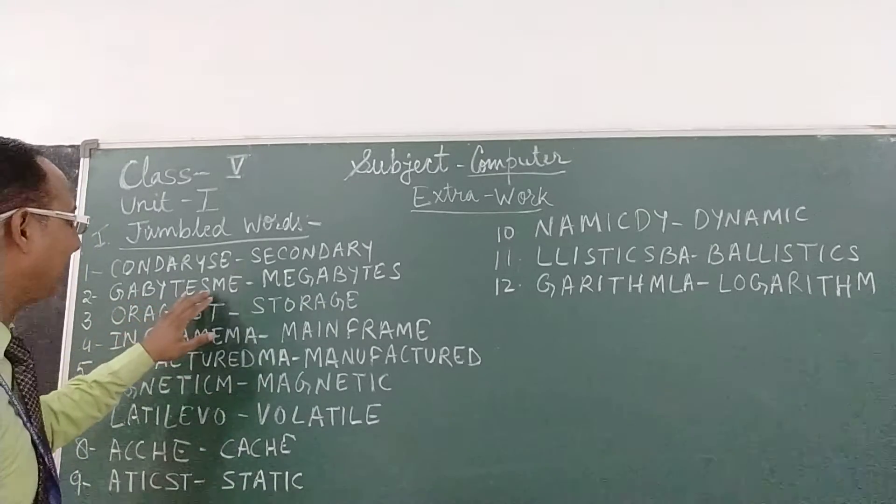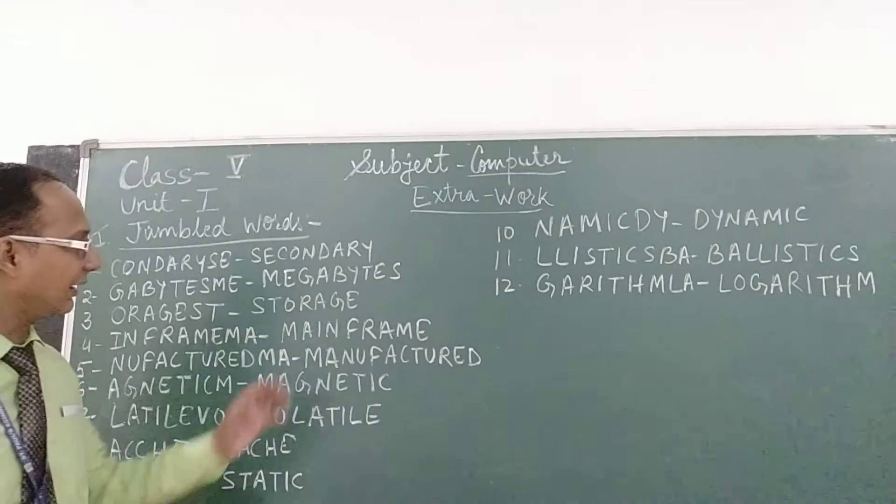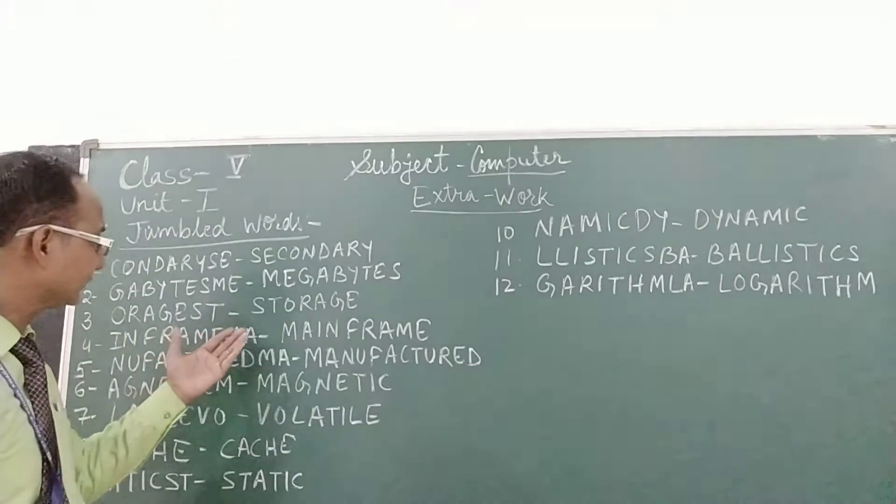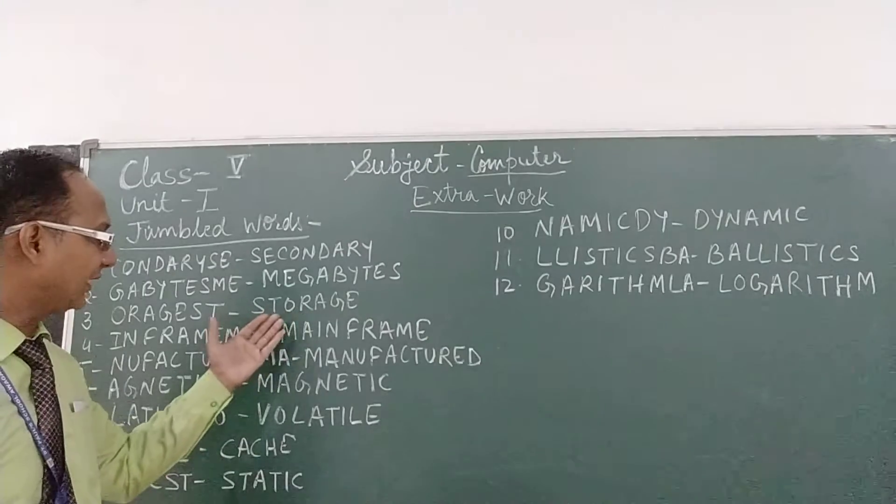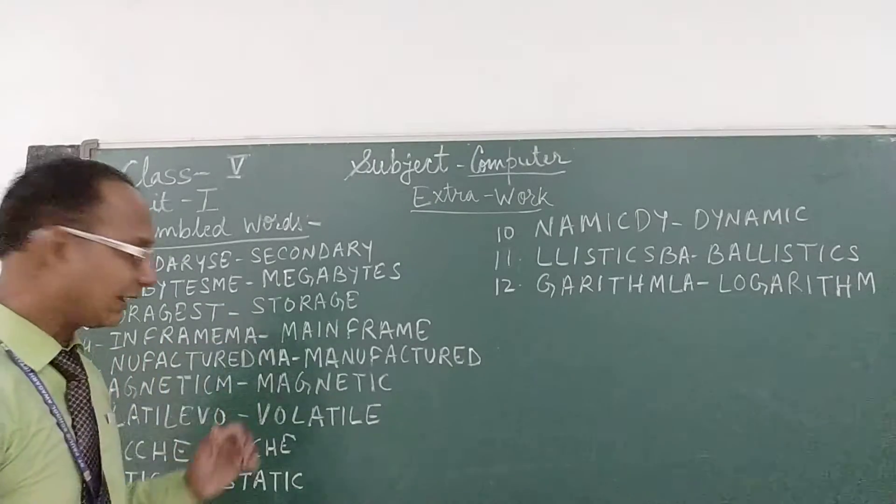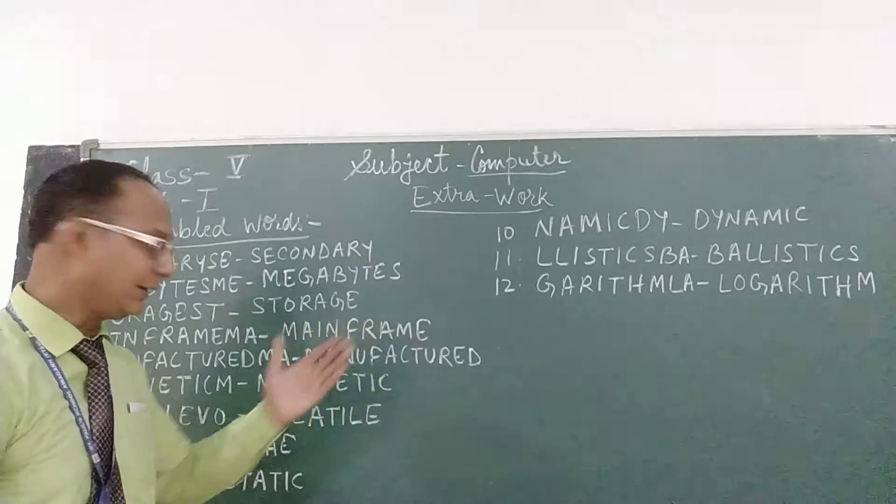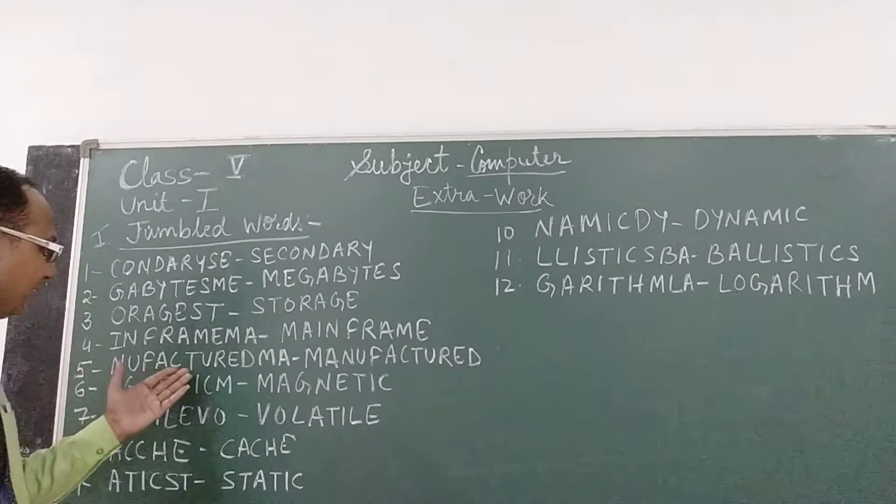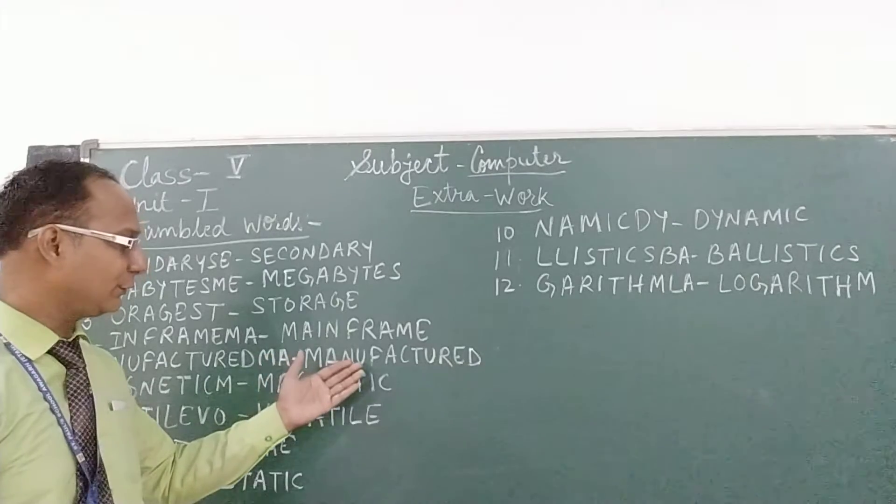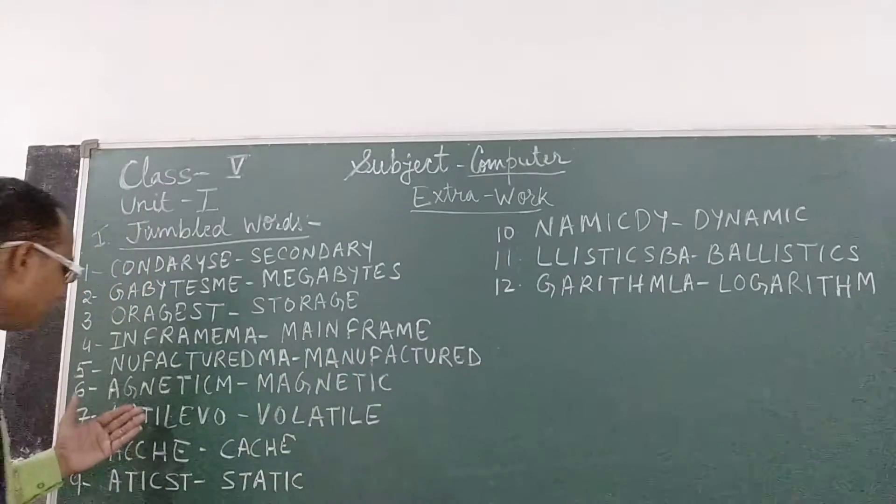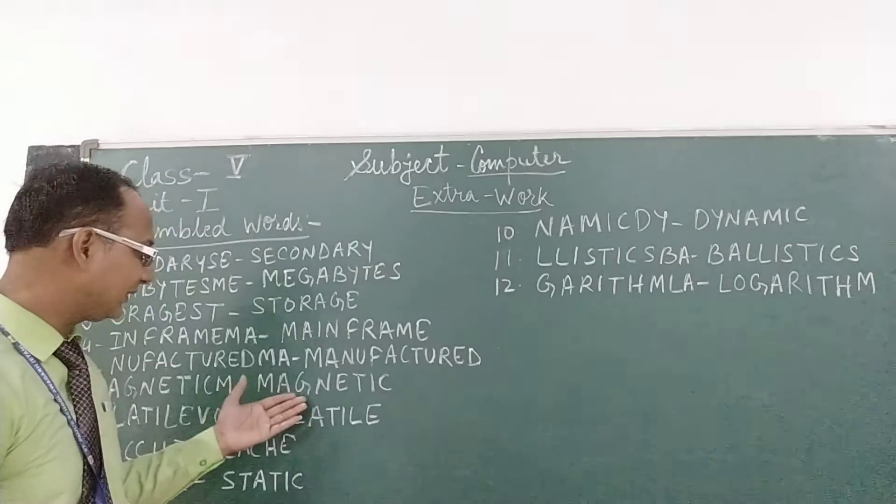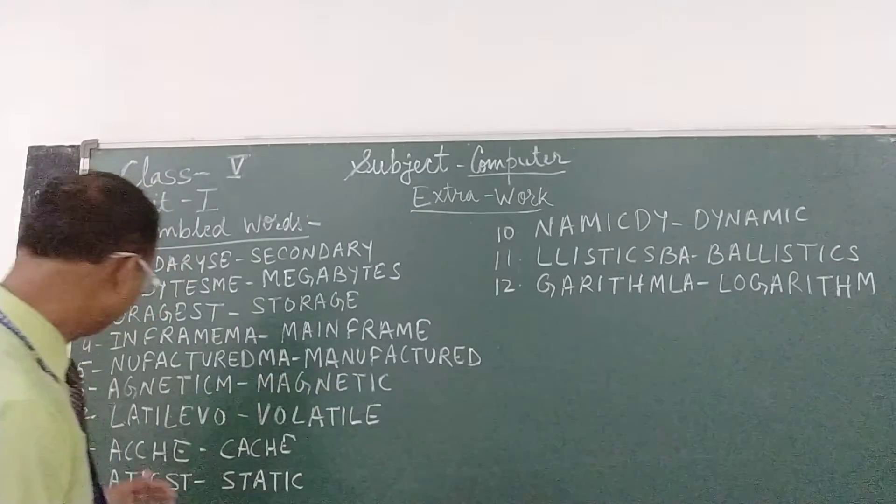Now see, note down, first see properly, read it and then note down in your word books. First is C-O-N-D-A-R-Y-S-E, the correct word form is secondary S-E-C-O-N-D-A-R-Y. Second is G-A-B-Y-T-E-S-M-E, the correct word form is megabytes M-E-G-A-B-Y-T-E-S.